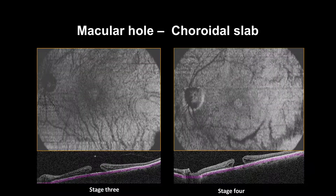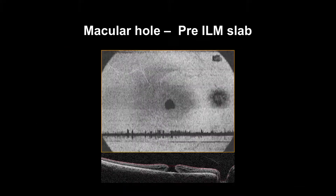The choroidal slab will show a projection artifact. EnFace OCT can be used to follow up patients with full thickness macular hole post-surgery, as it will show changes on both the ILM and IPL-INL slab that depict macular hole closure.